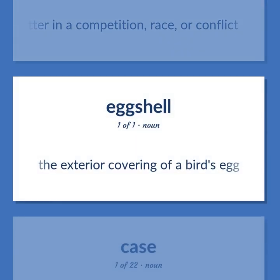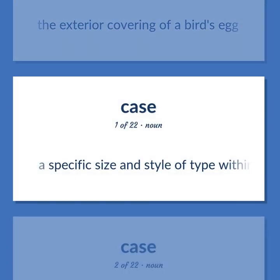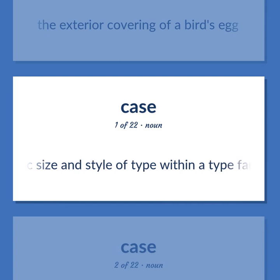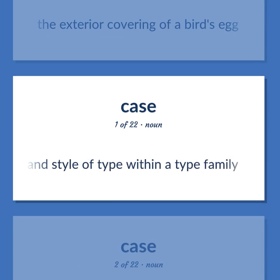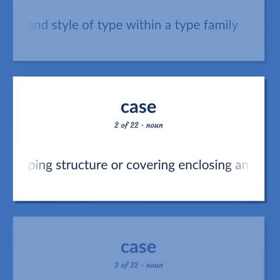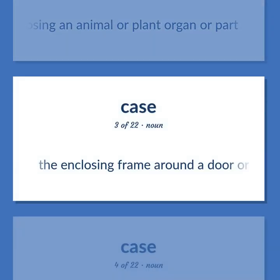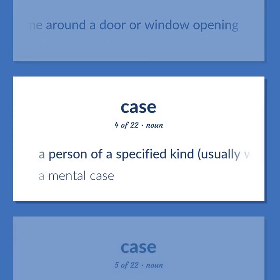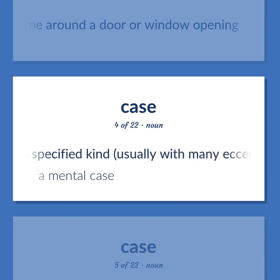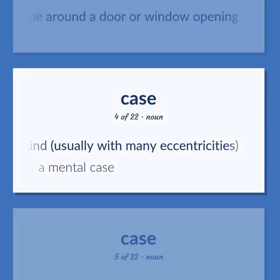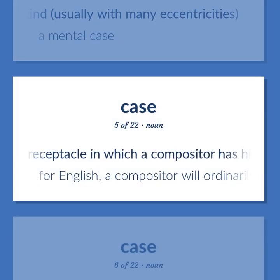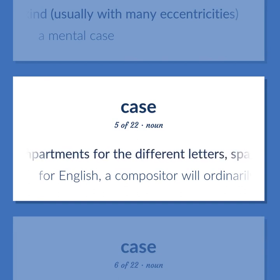The exterior covering of a bird's egg. A specific size and style of type within a type family. An enveloping structure or covering enclosing an animal or plant organ or part. The enclosing frame around a door or window opening. A person of a specified kind, usually with many eccentricities. A mental case. Printing: the receptacle in which a compositor has his type, divided into compartments for the different letters, spaces, or numbers.